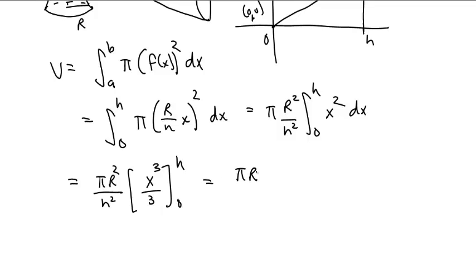So that pi r squared over h squared is just waiting and waiting. And inside we have h cubed over 3 minus 0 cubed over 3, but that's nothing.